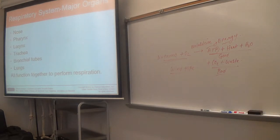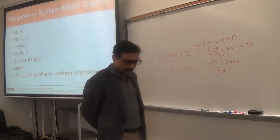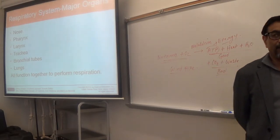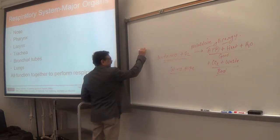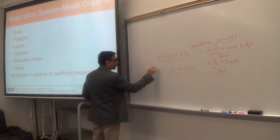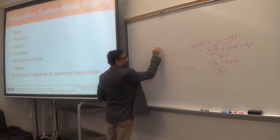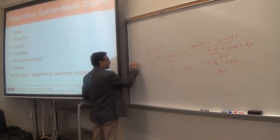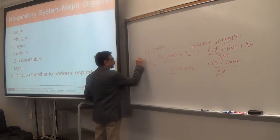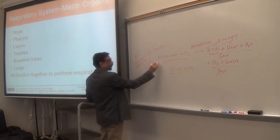So the pharynx is muscular, the larynx is mainly cartilaginous, and the trachea is both cartilage and muscle. The lower end of the trachea divides into two branches called the primary or main bronchi — the right primary bronchus and the left primary bronchus.